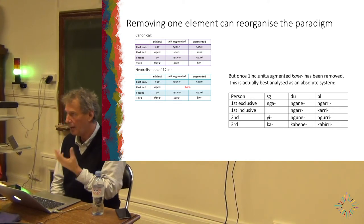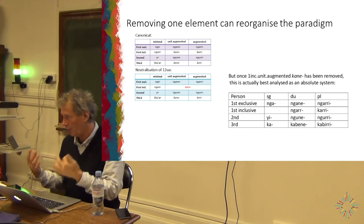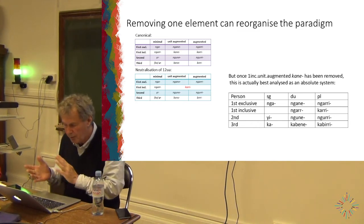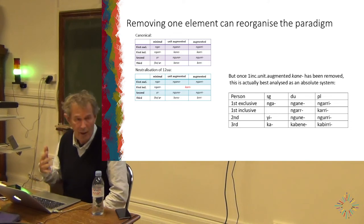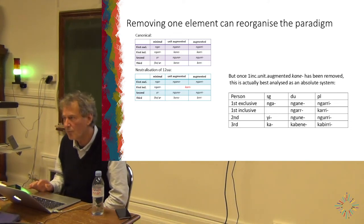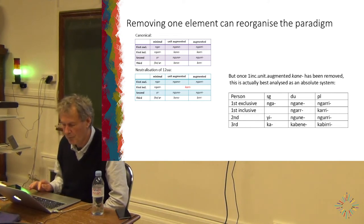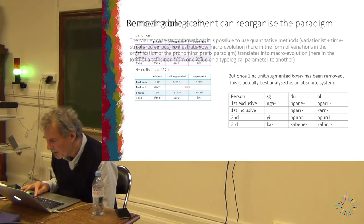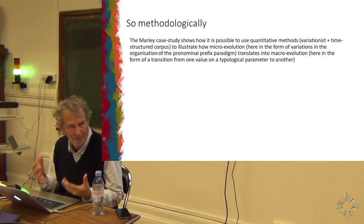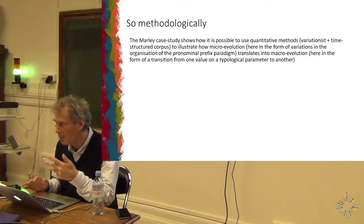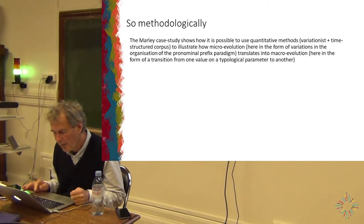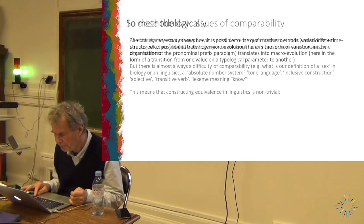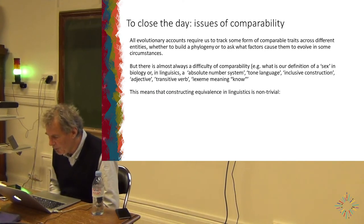Thanks to work like this, we can look at a particular typological change in progress — in this case, between an absolute number system in pronouns and a relative one — and chart its time course. It suggests a fairly plausible reason: the rarest form didn't survive. Methodologically, this shows that you can link microevolution — the sorts of things you can find in a community — and macroevolution, that is, a change in typological parameters.